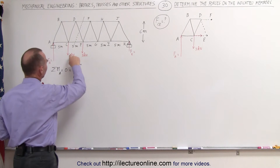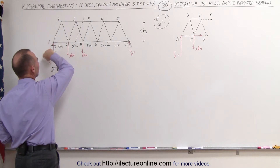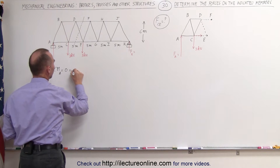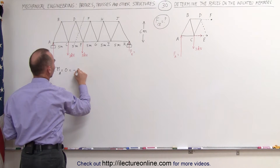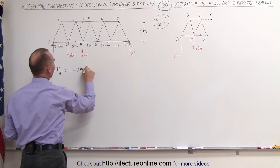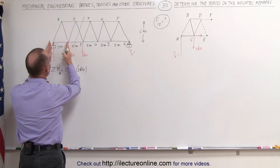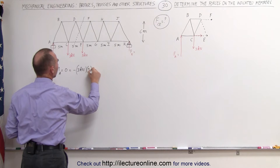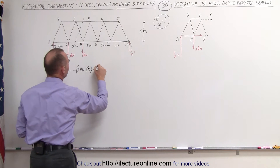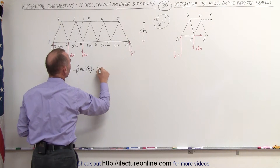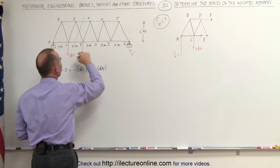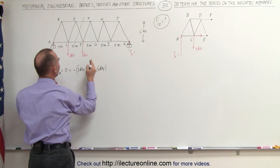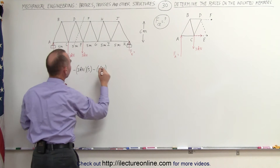We have the first force, the 3 kilonewton force, which gives a clockwise torque — that will be minus 3 kilonewtons times the distance of 5 meters from the point of rotation. Then we have another 3 kilonewton force, which also gives a clockwise moment and is therefore negative, with a distance of 10 meters.